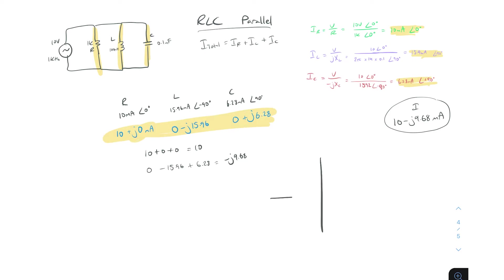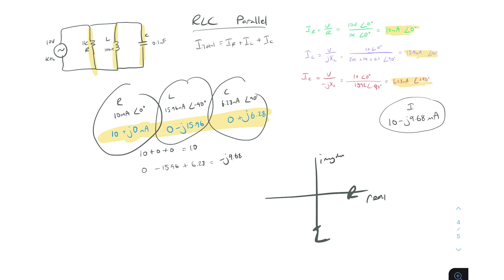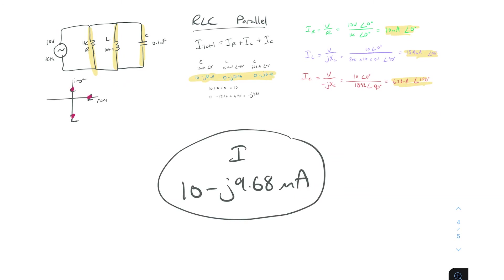To visualize this: on the real axis and imaginary axis, the resistor current is purely real at 10, the inductor current is purely imaginary at minus 15.96 so it's down the y-axis, and the capacitor is at plus 6.28 with no real part so it's up the y-axis. That's how you can think about the three branch currents.